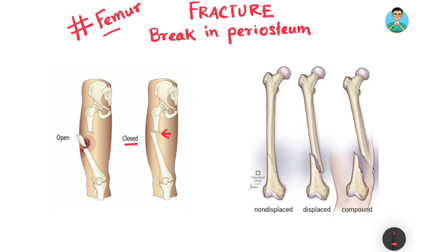In some unfortunate cases, a bone can break into two pieces or multiple pieces and one or more fragments can come out of the soft tissue boundary through a wound. In that case the fracture is known as an open fracture, also known as a compound fracture. So the broad classification is: closed fracture, where bone fragments stay within the skin boundary, and open or compound fracture, where fragments pierce through the skin.